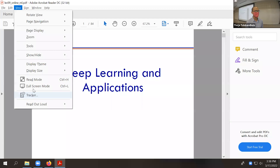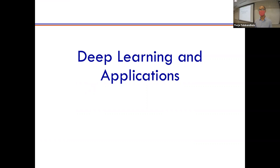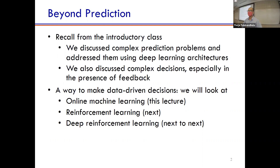Let's get started. The first 20 minutes or so is going to be quite general. Basically we are trying to make a transition. Over the past several lectures, we've been looking at popular architectures — feed-forward networks, convolutional networks, recurrent networks, transformer architectures, GANs, VAEs. There are hundreds of variations of each one of them. We've been looking at models focused on unsupervised and supervised learning.